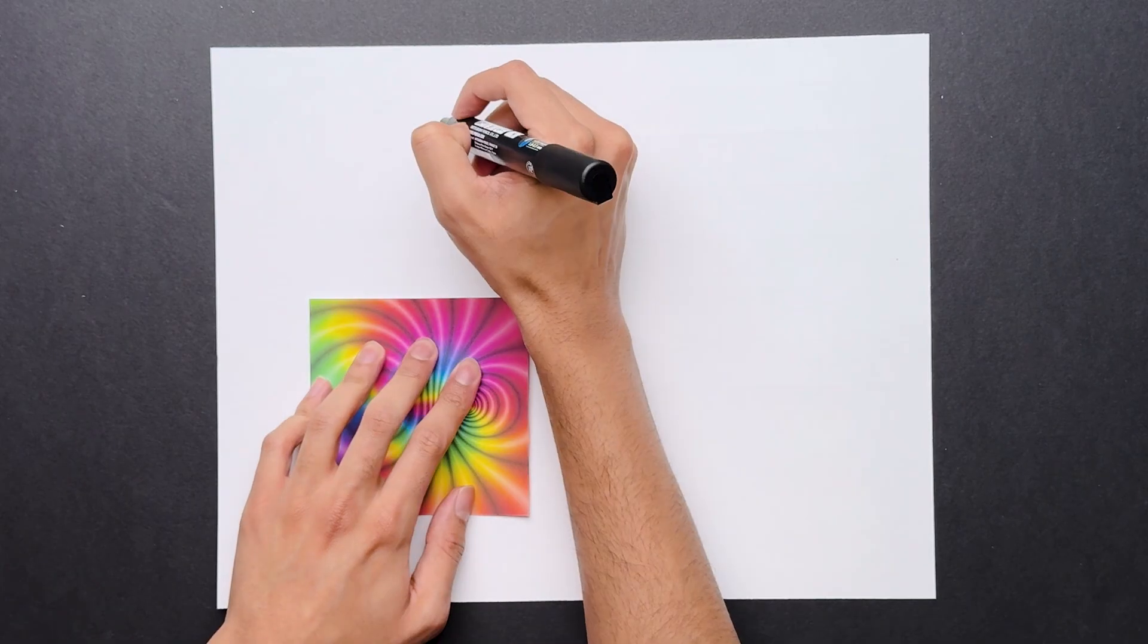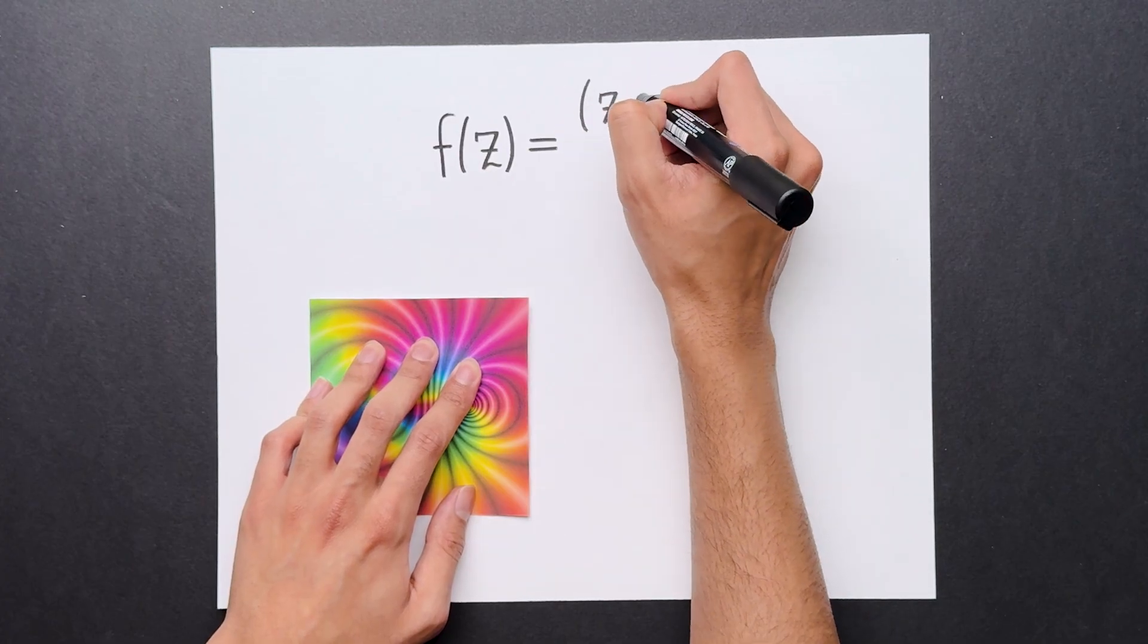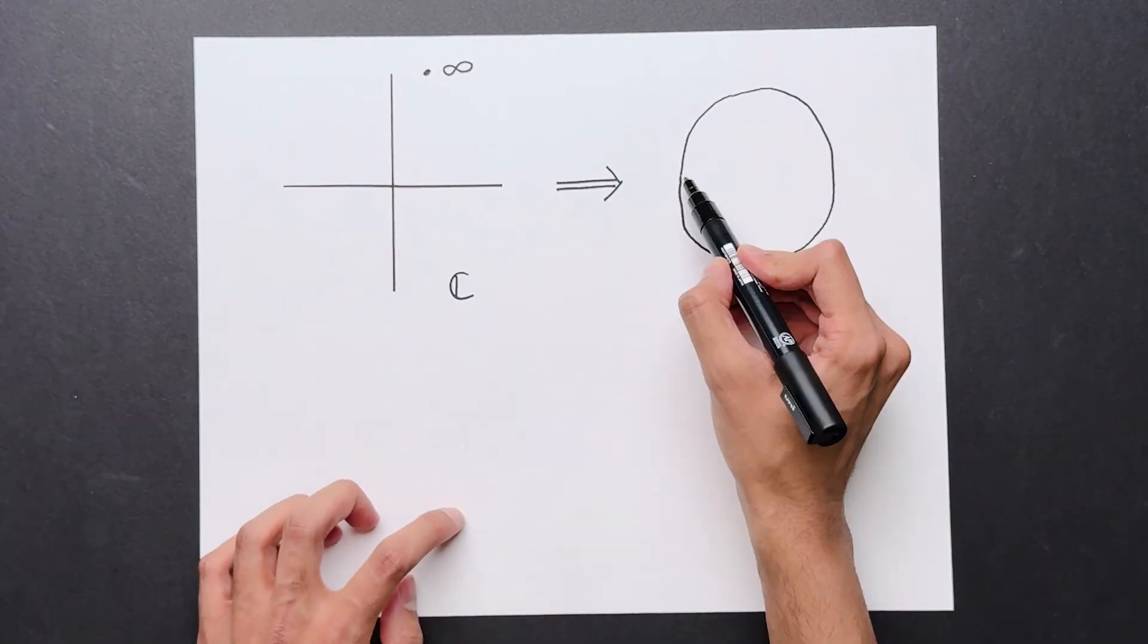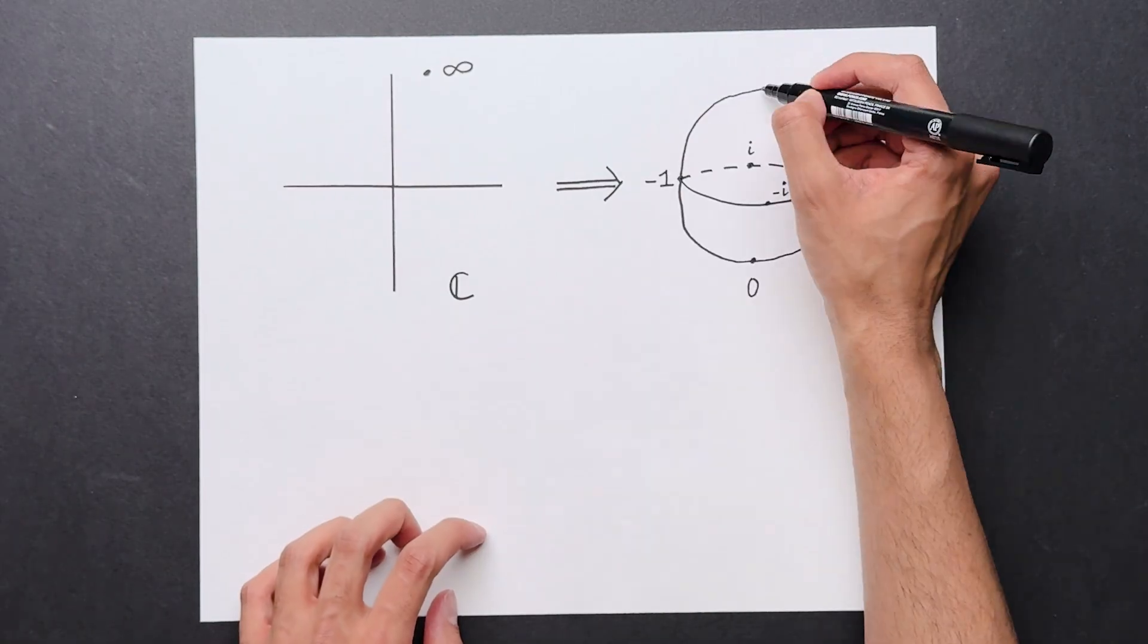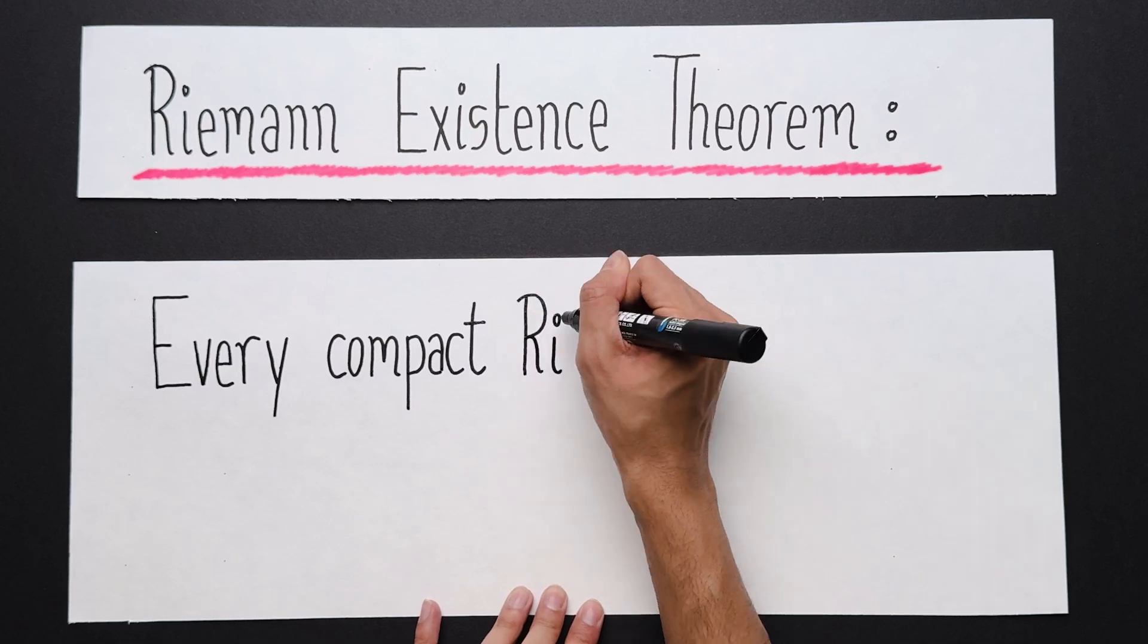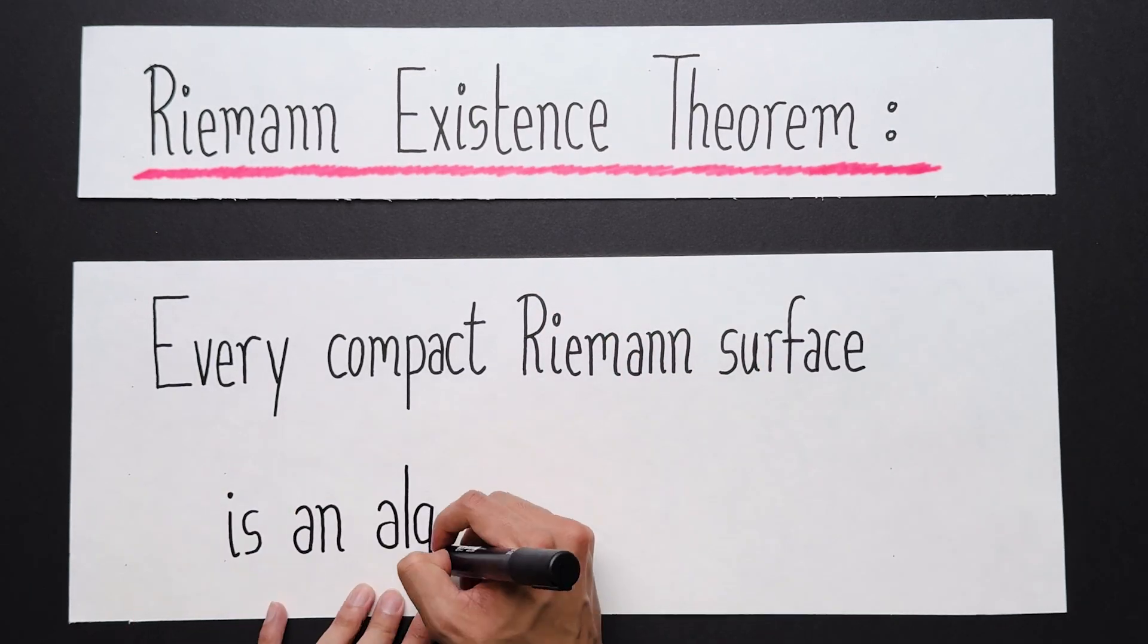In this video, I'll first explain the basics about complex functions, how to visualize them and what their properties are. Then we'll see our first example of a Riemann surface, the so-called Riemann sphere, and we'll see that it has a surprising algebraic property. Finally, I'll be able to state Riemann's existence theorem and why you should care about it.